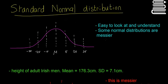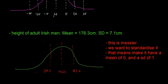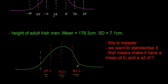Normal distributions generally can look quite a lot messier. For example, the heights of adult Irish men has a mean of 176.3 centimetres and a standard deviation of 7.1 centimetres. If you draw that onto a normal distribution, you have 176.3 in the middle, then 183.4 and 169.2, and so on for two and three standard deviations. It's quite messy and not that easy to work with, so we want to standardize it.